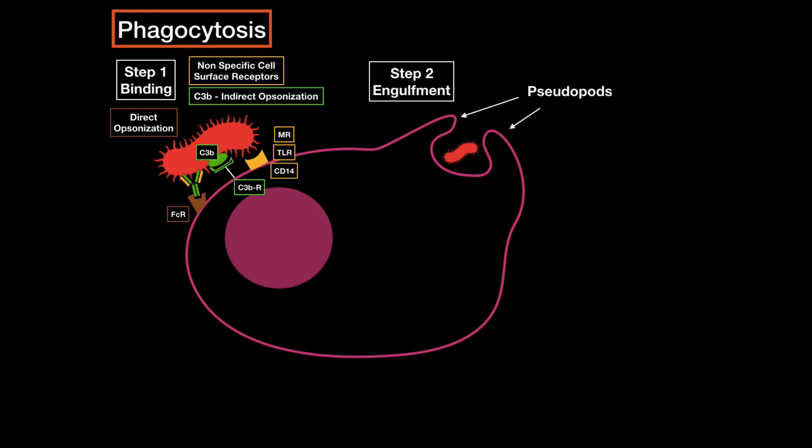Step two is engulfment through forming pseudopods around the bacteria. And then step three is actually forming a phagosome, a vesicle inside the phagocyte to kill the bacteria. Kind of like a prison. Now, when a phagocyte engulfs a bacteria, the phagocyte's oxygen consumption increases, because it needs more energy. And this increase in oxygen consumption produces reactive oxygen-containing molecules that are antimicrobial. Oxygen gets converted into superoxide, hydroxyl radicals, hydrogen peroxide, or even nitric oxide.